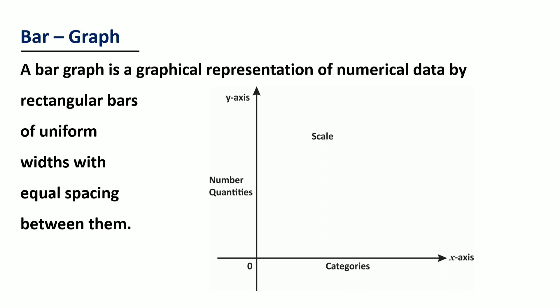You know that we write categories on x-axis and the quantity, that is numbers, on y-axis. We need to mention the scale of the data and we give a suitable title to the bar graph.